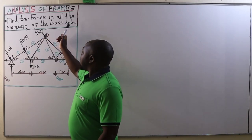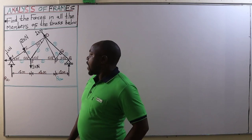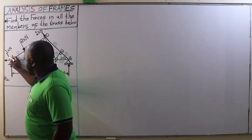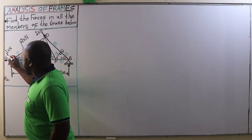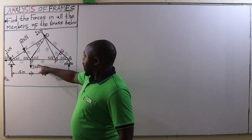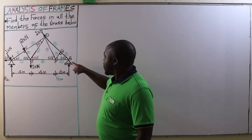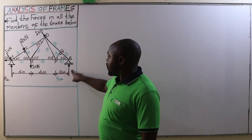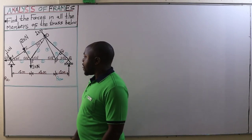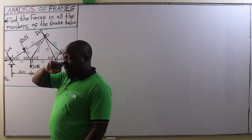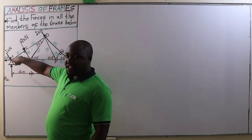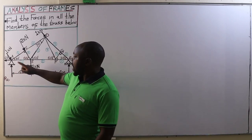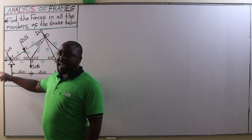Find the forces in all the members of the truss shown below. Our truss consists of three inclined forces inclined at an angle of 60 degrees. At joint E we have a vertical load of 1 kN. Joint B is supported on rollers, giving a vertical reaction RB. Joint A is a hinge, giving a vertical reaction RA and a horizontal reaction HA.